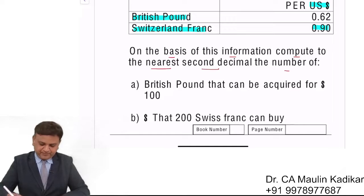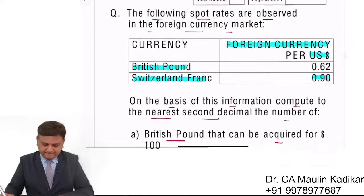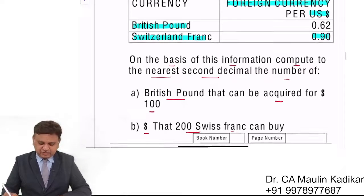There are two questions, A and B. Question A is: British Pound that can be acquired for $100. And dollar that 200 Swiss Francs can buy. I request you to give an answer for only question A in the chat box.